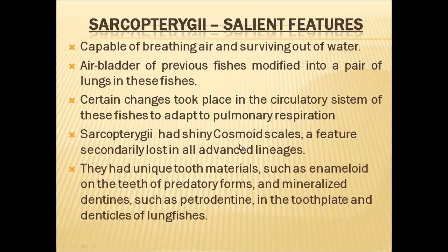Sarcopterygii had shiny cosmoid scales, and this feature is lost in all advanced lineages such as Coelacanth and lungfishes — we do not see cosmoid scales in those living today. Primitive Sarcopterygii fishes had these shiny cosmoid scales. They also had a unique tooth material such as enameloid and teeth of predatory form. The teeth of these fishes have mineralized dentine such as petrodentine, and they also have tooth plates and denticles of lungfishes.